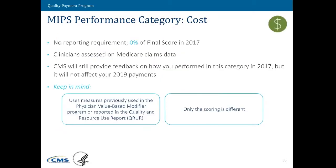Let's move on to slide 36, the cost performance category. We haven't talked too much about cost, and the reason why is because we're actually not assessing cost for payment purposes in this first year. Rather, we will be calculating the cost performance category based off of your claims data that you submit to us, and we will provide feedback on how you performed. We have included two measures previously part of the Physician Value Modifier — the Medicare Spending Per Beneficiary and a total cost measure — and we have also included 10 episode measures.